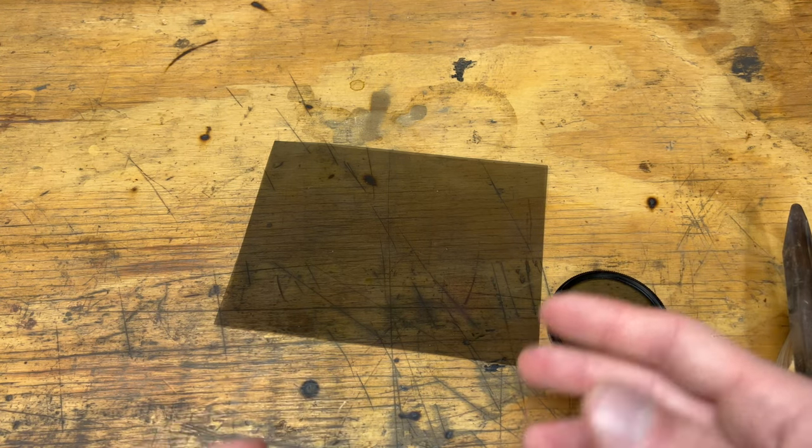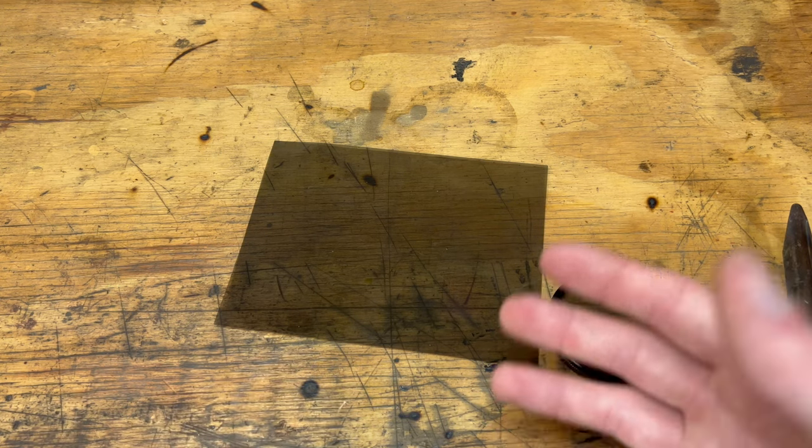The ability to see stress is because materials that are typically not doubly refractive become so when stressed. The double refraction creates light bands in the materials showing where the stress is.